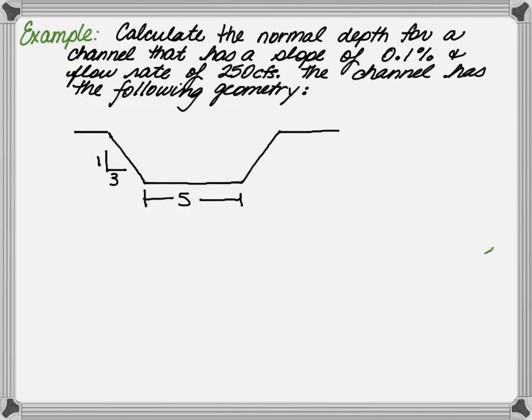This following example will help illustrate the point. Calculate the normal depth for a channel that has a slope of 0.1%, a Manning's roughness of 0.03, a flow rate of 250 CFS. The geometry of the cross-section is trapezoidal with a width of 5 feet and side slopes of 3 to 1.